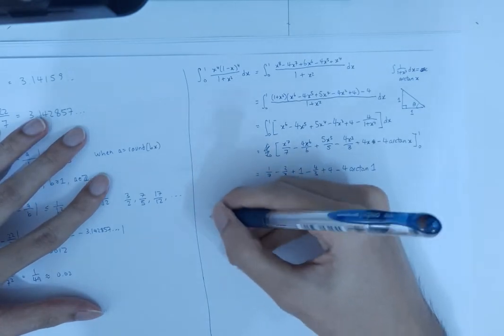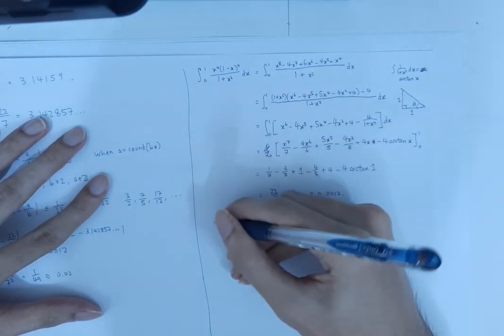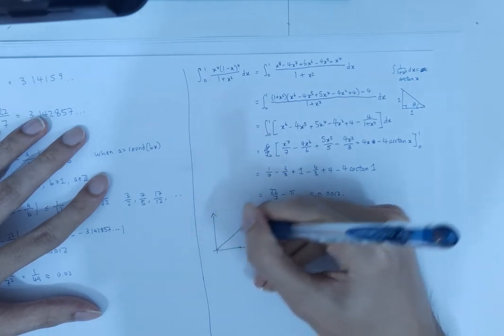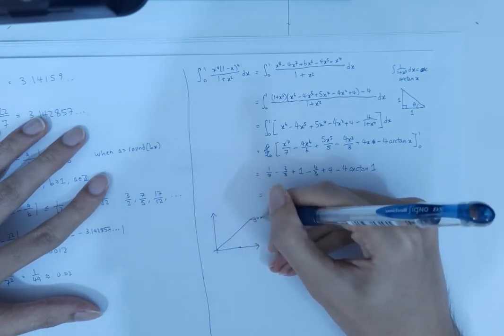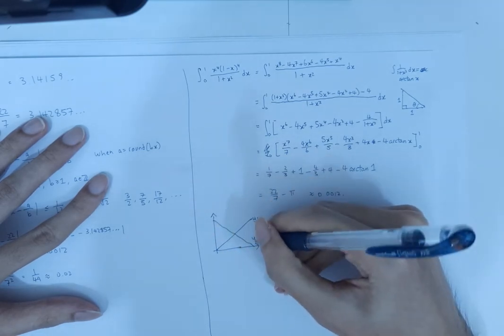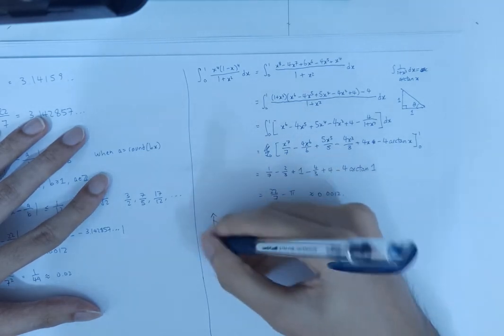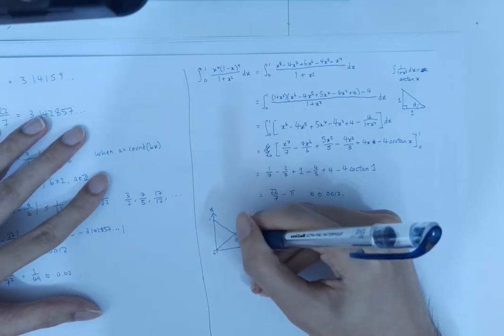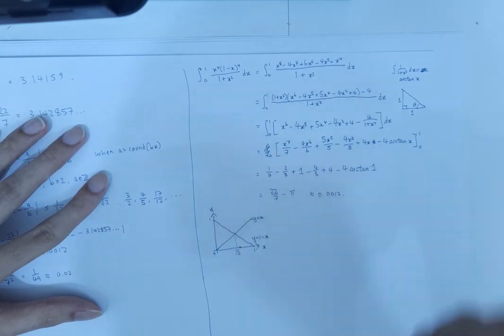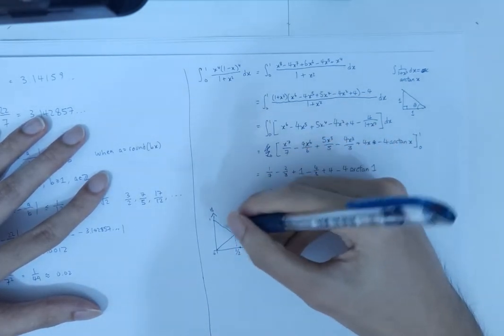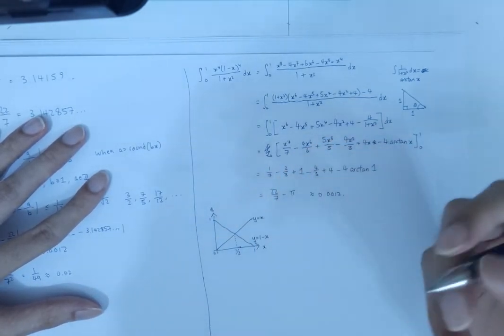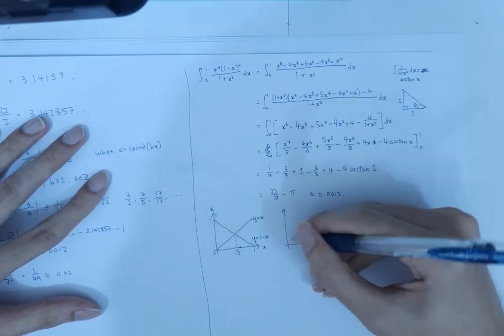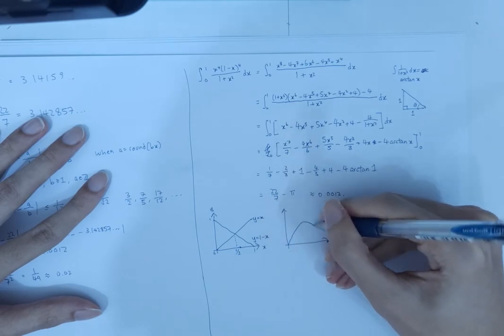So we look at the graphs of the functions y equals x and y equals 1 minus x. The midpoint is half. So what happens when you multiply these two functions together? What you get is something that looks like this, a parabola.